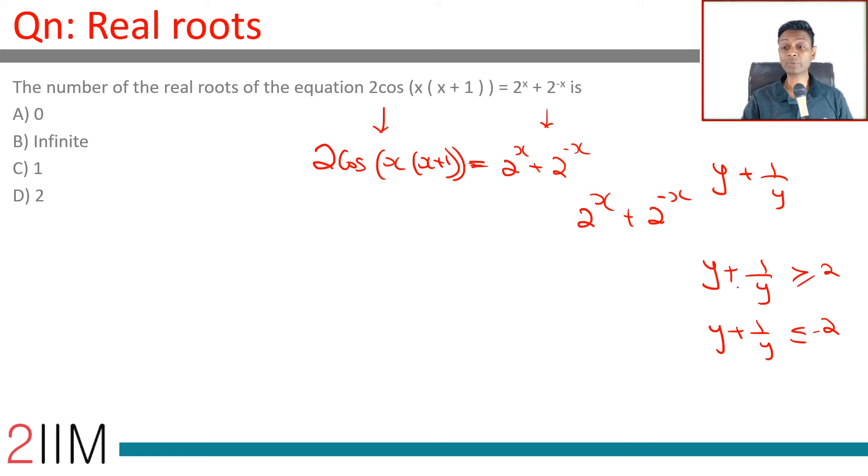Think about it. 3 plus 1 by 3, 5 plus 1 by 5, root 2 plus 1 by root 2. y plus 1 by y will be 2 when y is 1. y plus 1 by y will be minus 2 when y is minus 1.